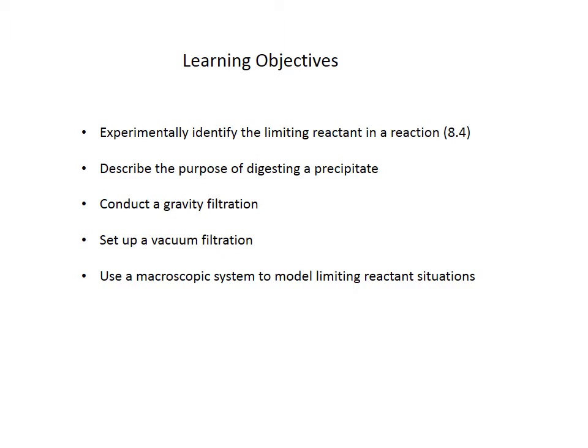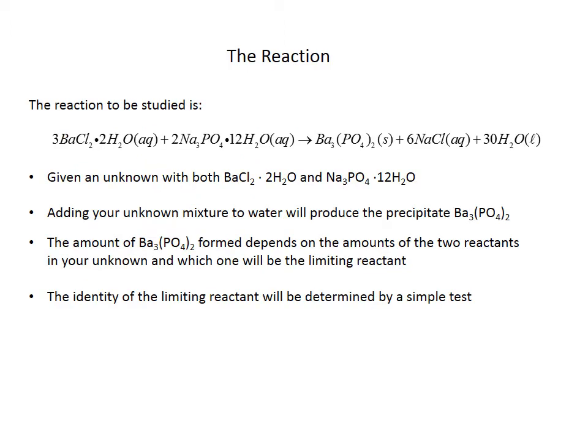There's a simple test for determining which one you ran out of. In the lab you'll be dealing with digesting a precipitate, which is simply getting larger and larger particles so it filters better. You'll be looking at two forms of filtration: gravity filtration and vacuum filtration — those are much easier to see in the lab. We'll also look at a macroscopic system to model limiting reactant situations, for example using big objects to get some idea of the reaction.